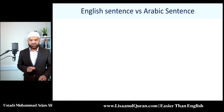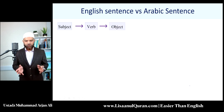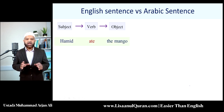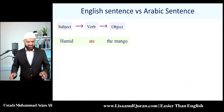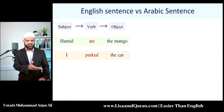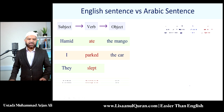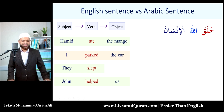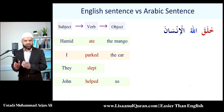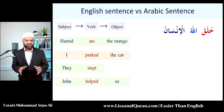Comparing this to English: in English we have a standard sentence structure — subject, followed by verb, then object if required. For example, 'Hamid ate the mango' — Hamid is the subject, the mango is the object. 'I parked the car' — the car is the object and I am the doer. 'They slept' — no object required. 'John helped us' — the pronoun 'us' is the object. In English we cannot form a sentence without a verb; even 'is,' 'am,' or 'are' are verbs.